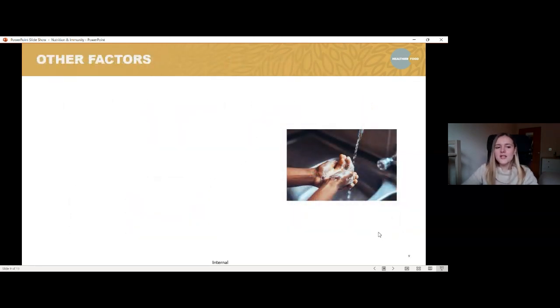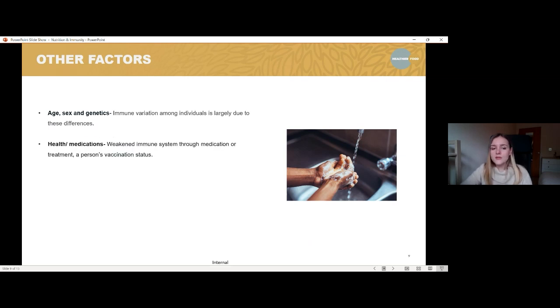And the next thing is just thinking about the other factors. So aside from nutrition, what other factors are involved with the immune system? What else can we kind of think about? What can we do to try and help our immune system? So first, we've got age, sex, and genetics. So the majority of variation within our immune health and how our immune systems work tend to be put down to these differences, mostly. Health and medications can also influence it. So I mentioned it briefly earlier that some people may have a weakened immune system because of a health condition, because of vaccination status, or because of some medications that they may be on.